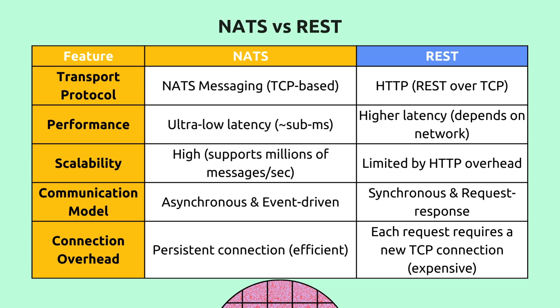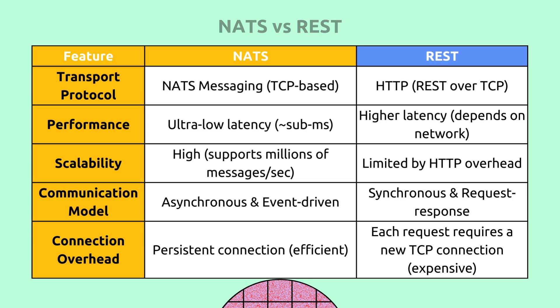Differences between HTTP and NATS: NATS is a TCP-based messaging protocol while REST APIs are HTTP-based (HTTP over TCP). Performance-wise, NATS offers ultra-low latency whereas REST APIs have higher latency due to the TCP handshake for each connection. Scalability-wise, NATS supports millions of messages per second while REST is limited by HTTP overhead. Communication model: NATS is asynchronous and event-driven; HTTP is synchronous request-response. Connection: NATS uses a persistent connection between services, while HTTP requires a new TCP connection per request — which is computationally expensive on CPU and RAM.